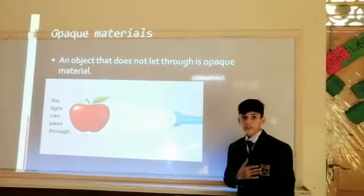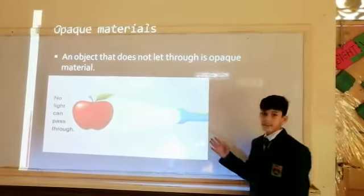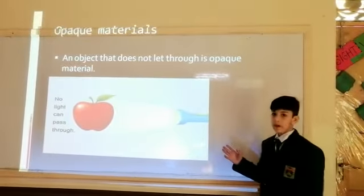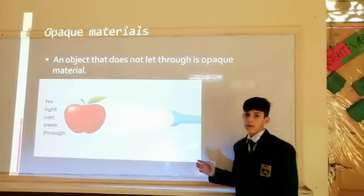Opaque materials. In opaque material, light doesn't pass through. It is an opaque object. There you can see the light can't pass through ever.